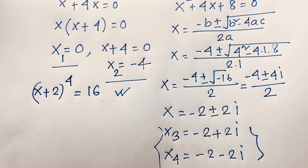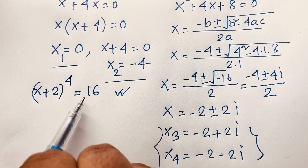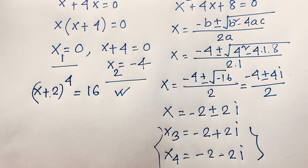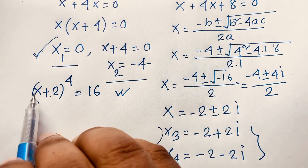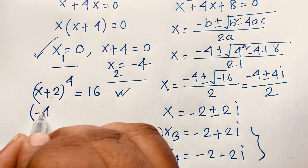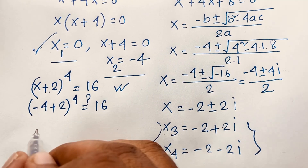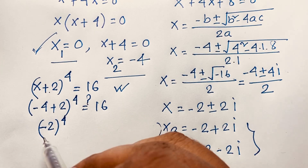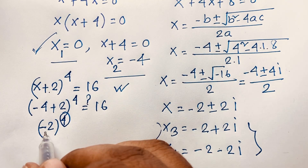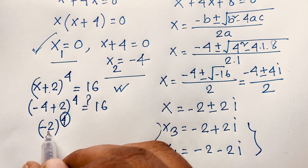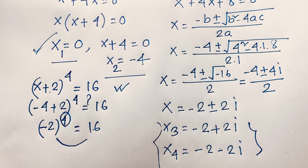Let's verify. If x equals 0, substituting gives 2 to the power 4, which is 16. Left hand side equals right hand side, so x equals 0 is confirmed. For x equals negative 4: negative 4 plus 2 to the power 4 equals negative 2 to the power 4 equals 16. Remember that a negative number raised to an even power is always positive, so negative 2 to the power 4 is 16. Left hand side equals right hand side, so x equals negative 4 is also confirmed.